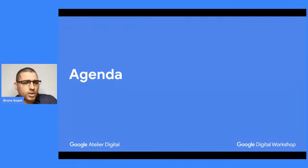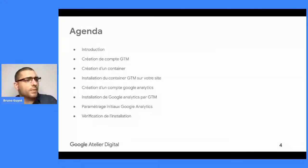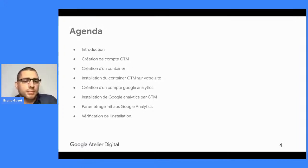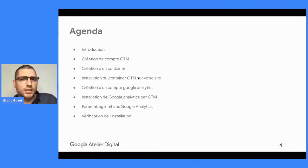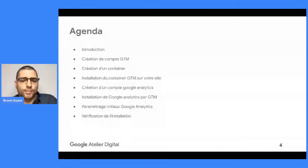Voyons tout de suite l'agenda. On va faire une brève introduction sur Google Analytics et sa place dans l'écosystème. On va voir la création de comptes pour Google Tag Manager, créer un conteneur, l'installer sur un site. Ensuite, on va créer un compte Google Analytics, l'installer par Google Tag Manager. Et à l'intérieur de Google Analytics, on va faire tous les paramétrages importants à faire dès le départ. À la fin, on s'assurera que l'installation qu'on a faite est bonne.